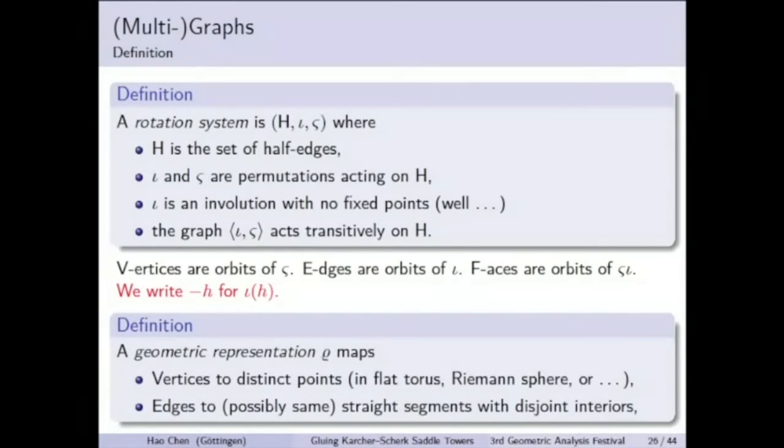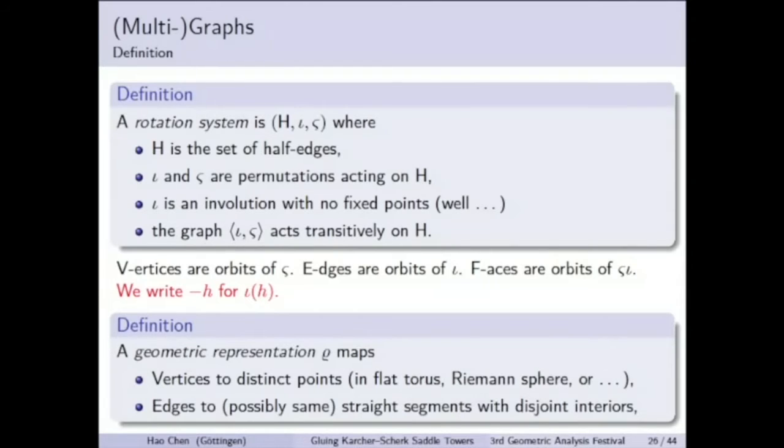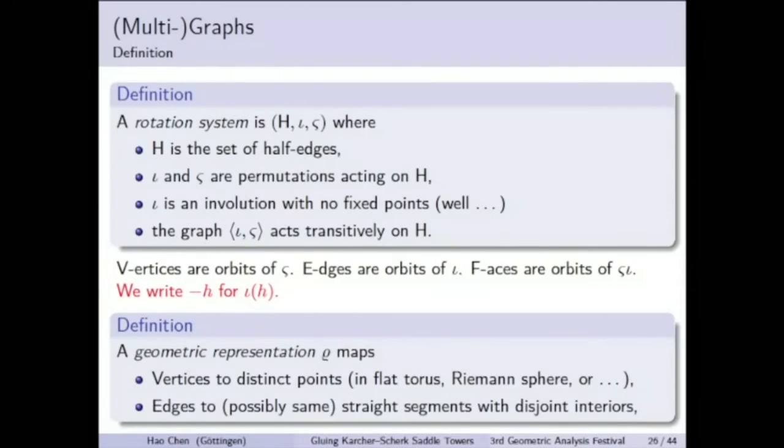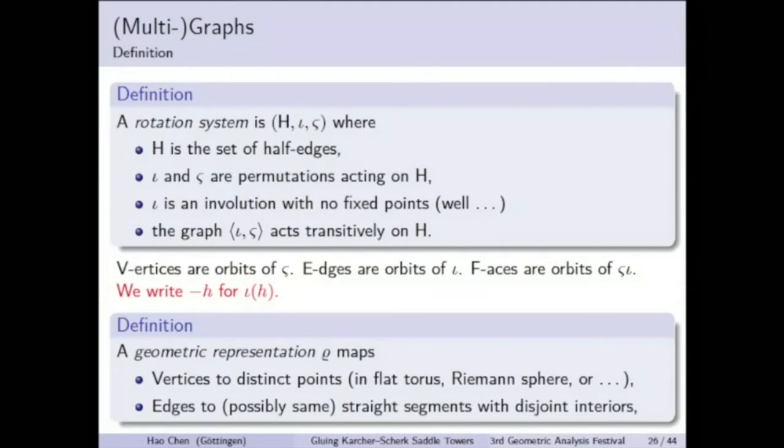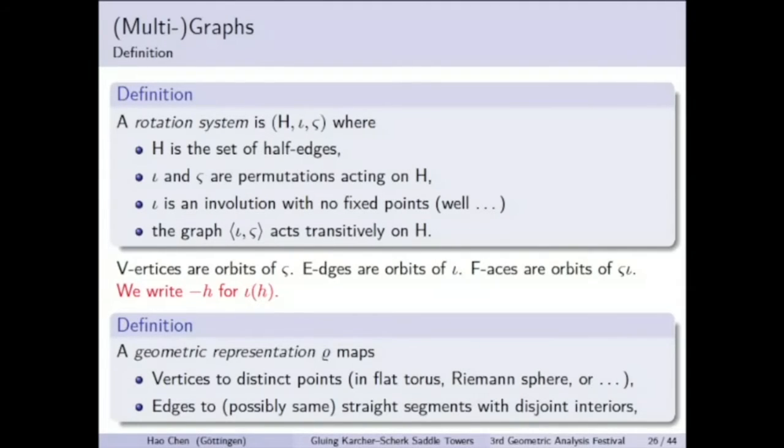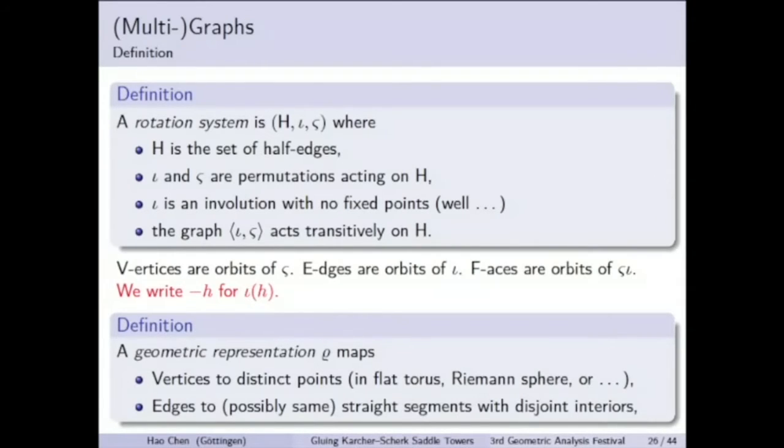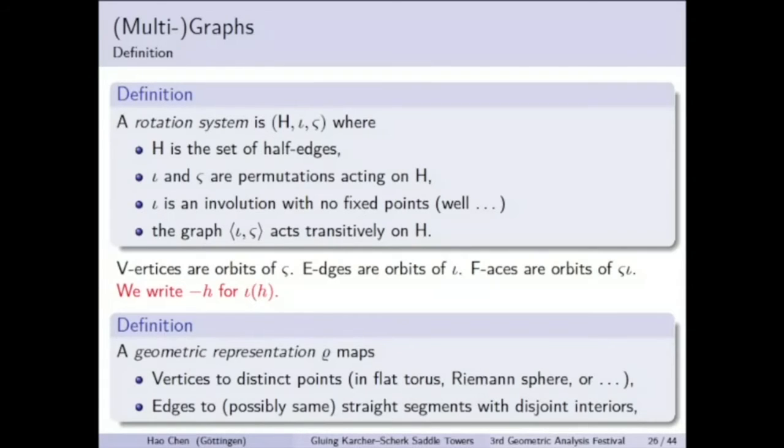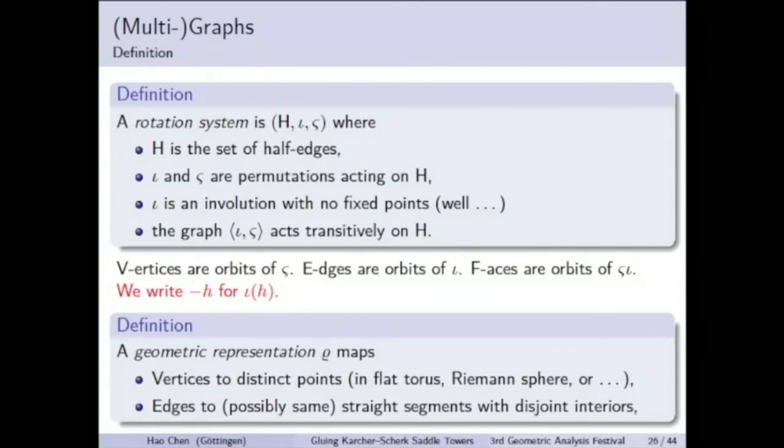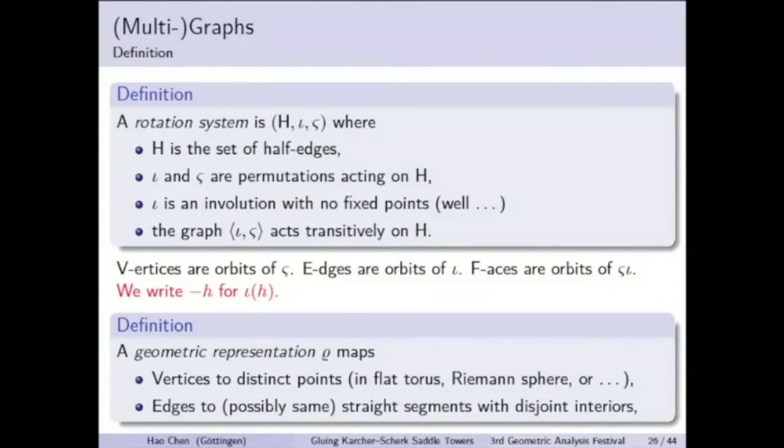Apart from the combinatorial data, we also want the graph to be geometrically represented depending on the context. The representation could be in the flat torus if we want to construct triply periodic minimal surfaces, or in the Riemann sphere if we want to construct singly periodic minimal surfaces.